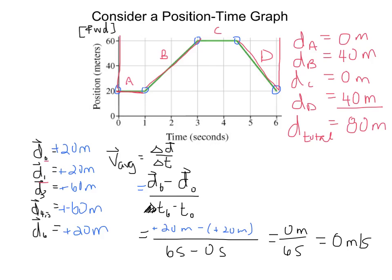So now we can find an average speed, because it's going to be the total distance over the total time, and we know that from our look at the graph that the distance is 80 meters, and the time is still 6 seconds.